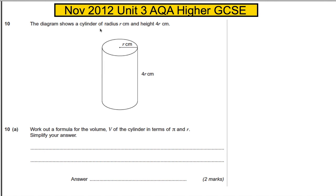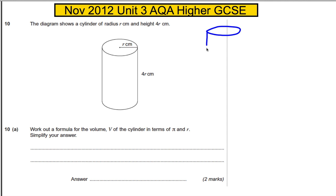The diagram shows a cylinder of radius R and height 4R. Work out the volume — the formula for V in terms of pi and R, and simplify your answer. In general, for any cylinder, let's draw a general cylinder. These are the ones given in the formula booklet. If H is the height and R is the radius, then the volume is the area of the cross-section, which is pi R squared.